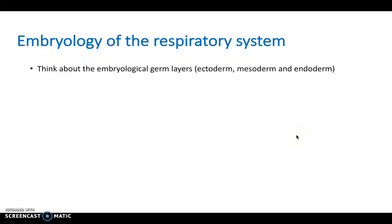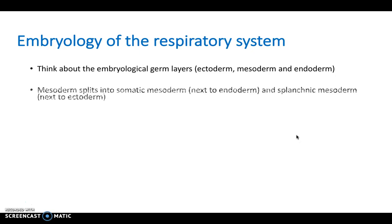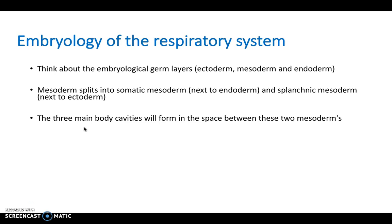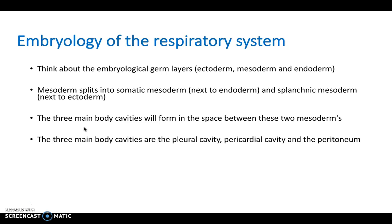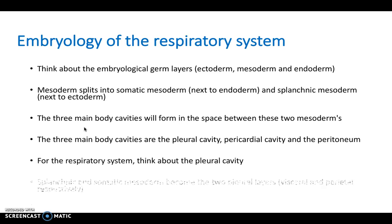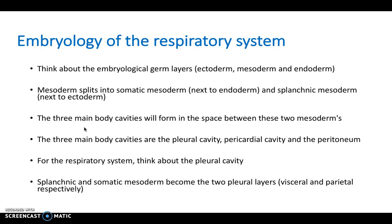Moving on to embryology — consider the three basic germ layers: ectoderm, mesoderm, and endoderm. The mesoderm splits into somatic mesoderm (next to the ectoderm) and splanchnic mesoderm (next to the endoderm). The three main body cavities form in the space between these two mesoderms: the pleural cavity surrounding the lungs, the pericardial cavity surrounding the heart, and the peritoneum surrounding the abdomen. For the respiratory system, the splanchnic and somatic mesoderm become the visceral and parietal pleural layers.